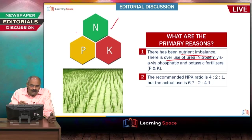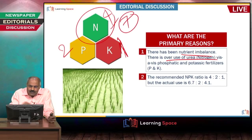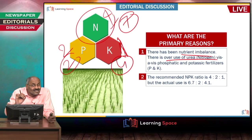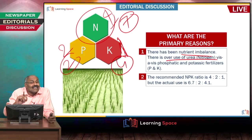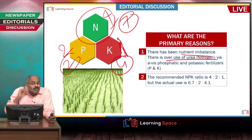Out of NPK, we are using more nitrogen. The ideal ratio is 4:1 for nitrogen to phosphorus and potassium, but the actual use is far more imbalanced — nitrogen use is around 7, while phosphorus and potassium usage is disproportionately low. There is a lot of imbalance, and our fertilizer subsidy policies are some of the reasons for this. The government now wants to control nitrogen use, and more details will be discussed with an article by Ashok Gulati on India's fertilizer policy.